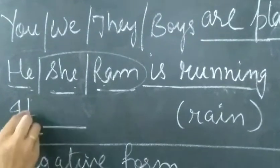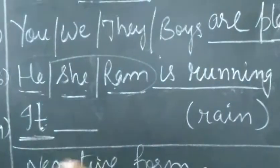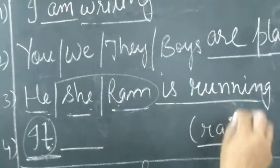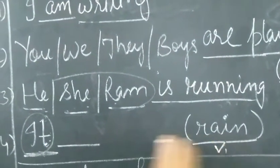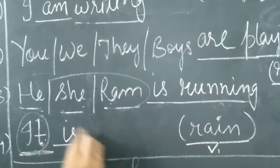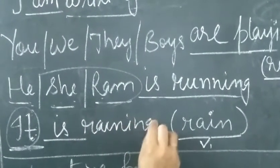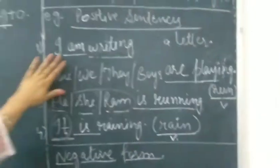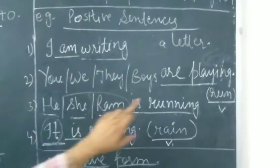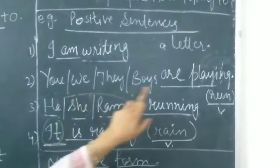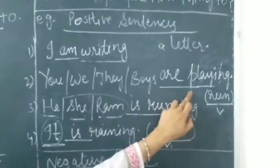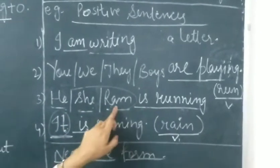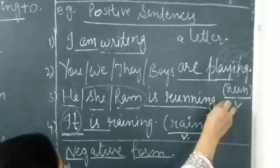And whenever any person is not there or any place is not there, what we can write it? It. Now, we are talking about rain. Here we have to use the verb, ing form of rain. So, it is raining. Now, these were the positive sentences. I am writing a letter. You are playing. We are playing. They are playing. Boys are playing. He is running. She is running. Ram is running. Then it is raining.